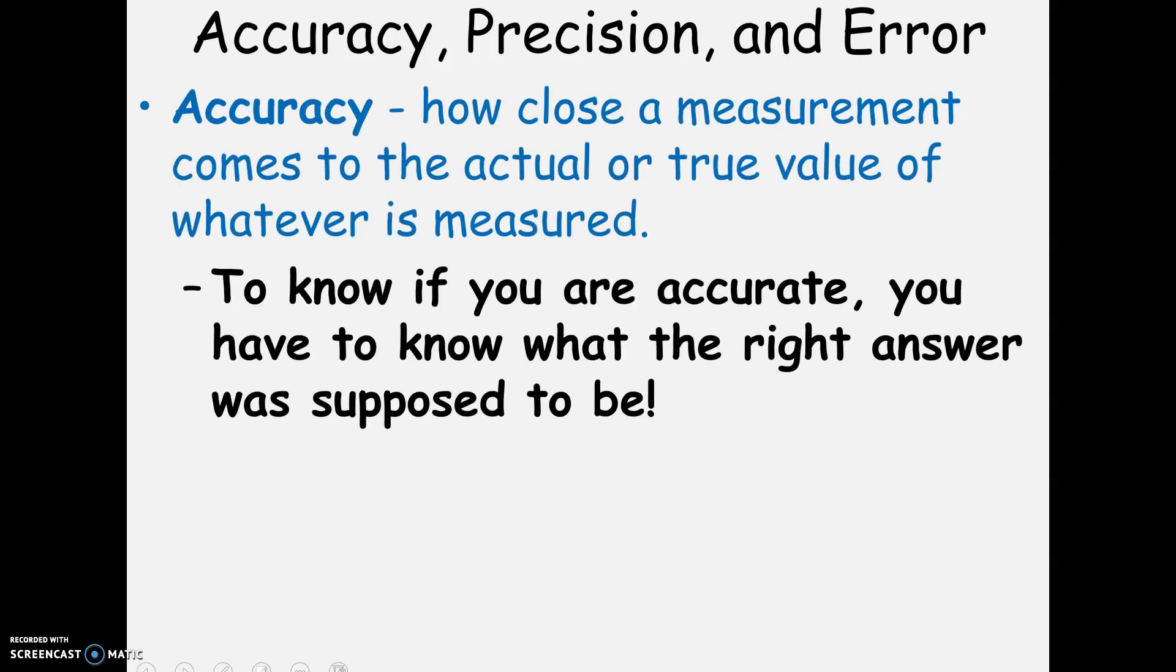So accuracy versus precision. Accuracy is how close you are when you take a measurement to the actual or accepted value. For example, there's an accepted value for the density of gold, there's an accepted value for the boiling point of water. And these values, even though they're still technically measurements, they've been measured with the best equipment.